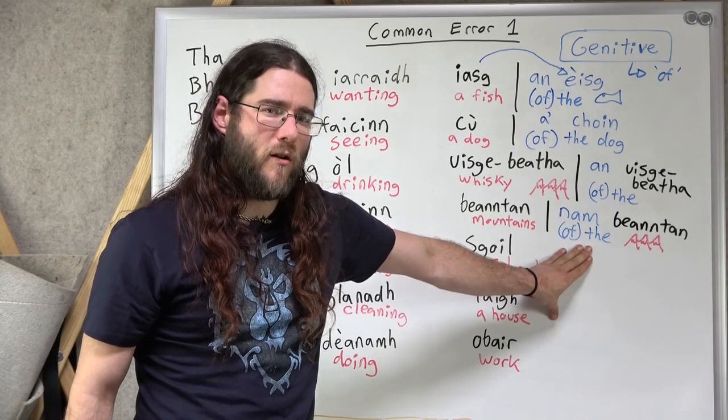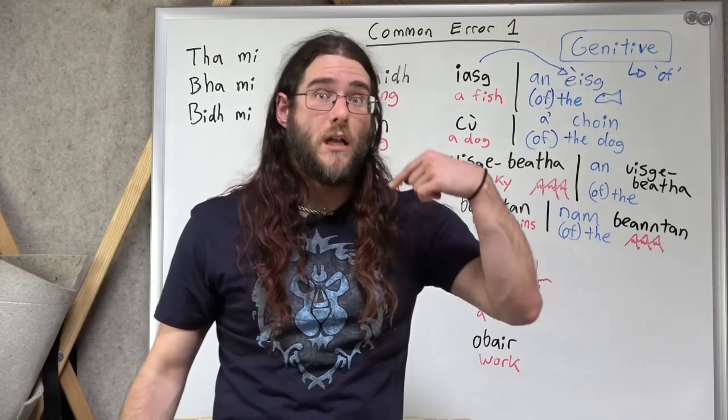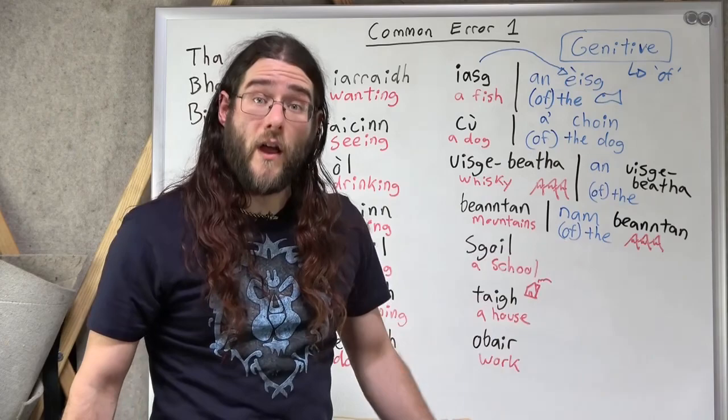Nam is used when you have three or more of something. In another way. Put another way. When you have a plural. Tha mi a' faicinn nam beanntan. I see the mountains. I see the houses. Tha mi a' faicinn nam beanntan.